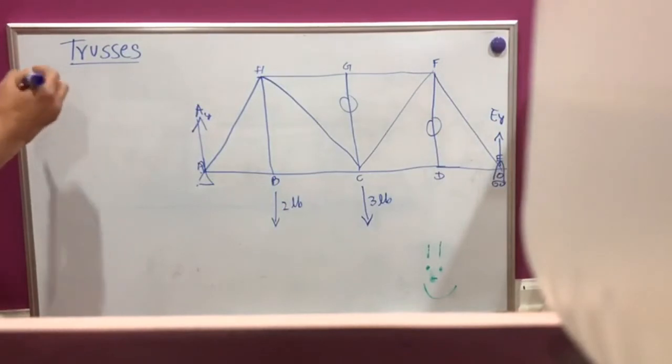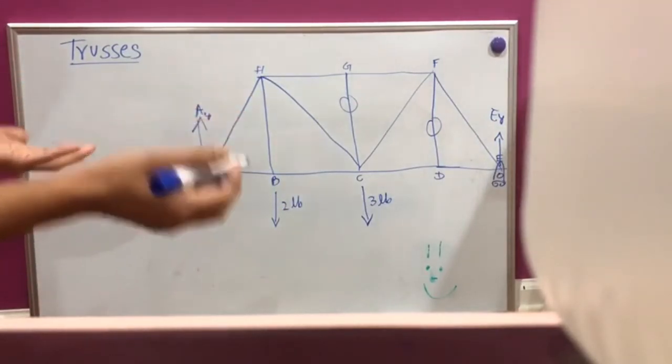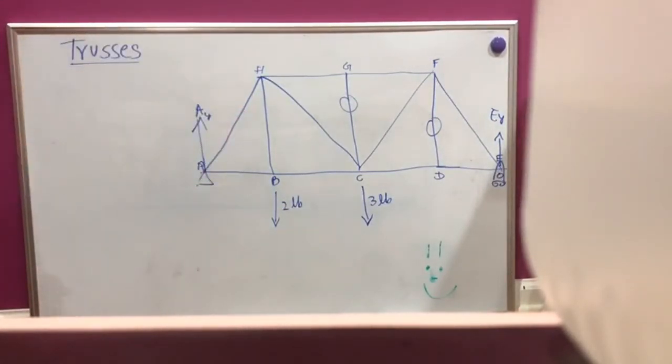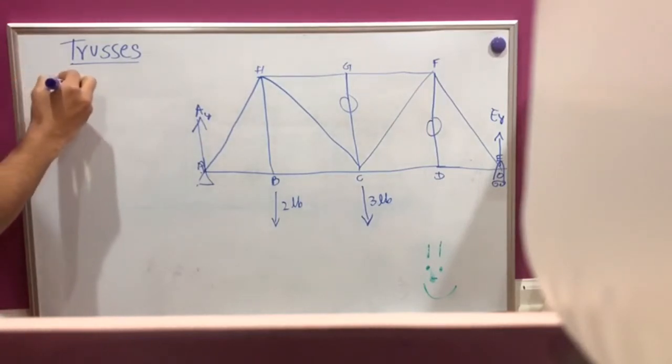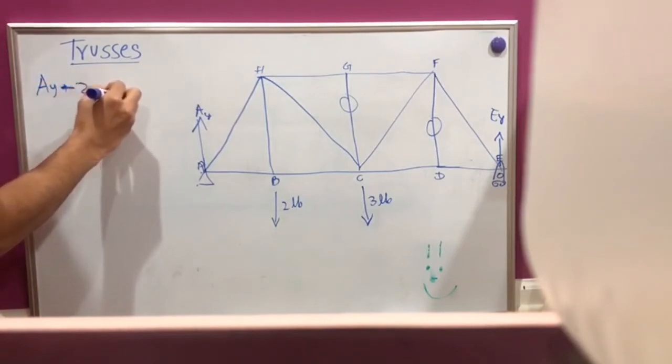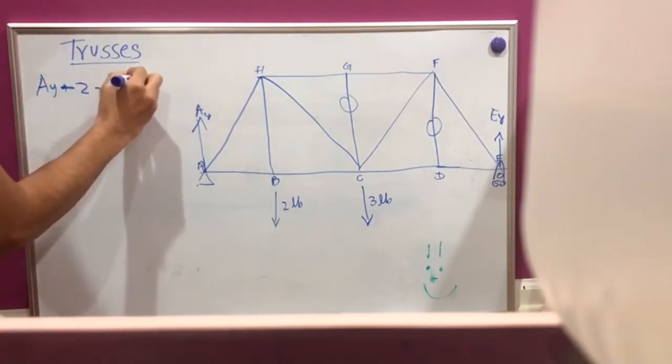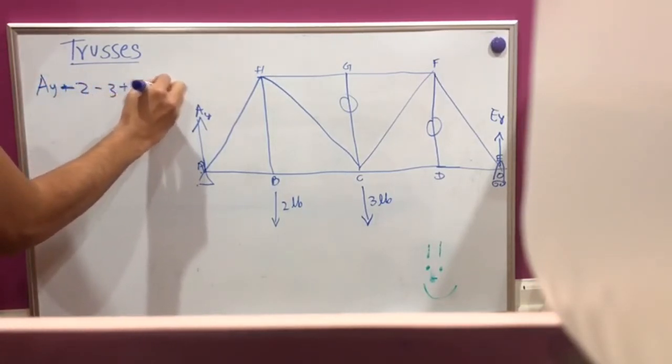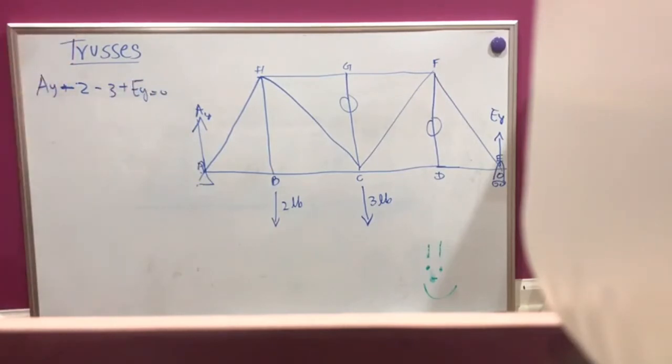So the thing is, all of them have to equal zero because this is a static structure. So it's going to be AY plus minus two minus three plus EY is going to be zero. That's our first equation.